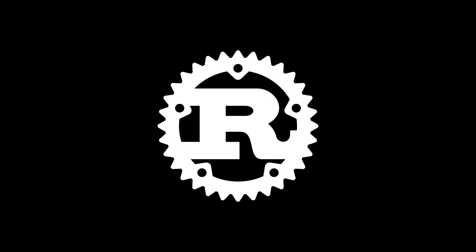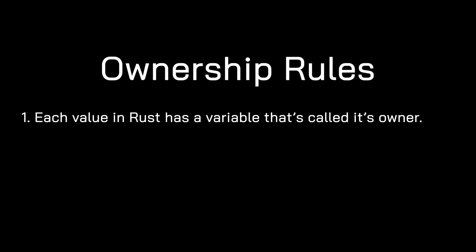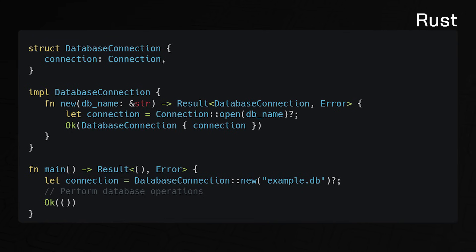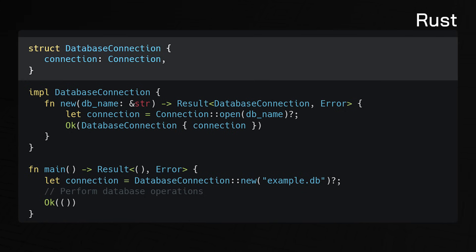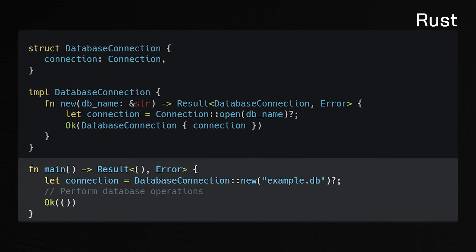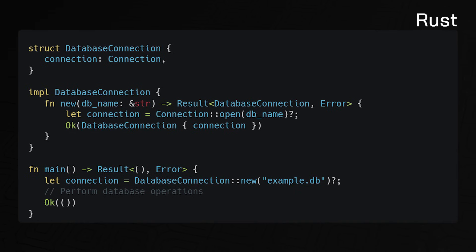The Rust compiler enforces a set of rules known as the ownership rules. Each value in Rust has a variable called its owner, there can only be one owner at a given time, and when the owner goes out of scope the value is dropped. In the Rust database example, there is no explicit destructor — the connection variable goes out of scope at the end of main, and the DatabaseConnection instance is dropped automatically along with any values it holds. The compiler simply follows the ownership rules, leading to clean code that avoids resource leaks.